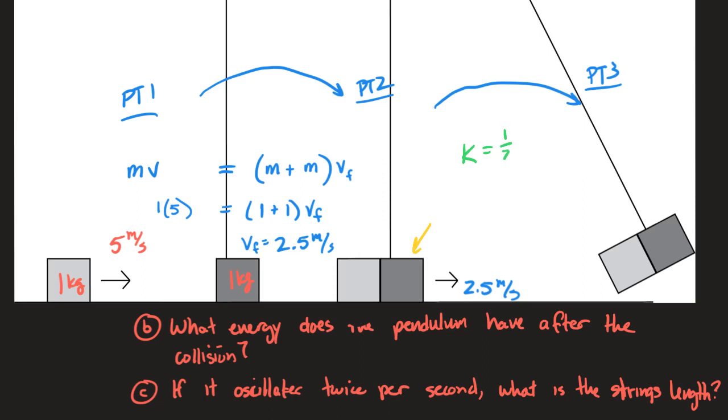That's going to be one half times the mass, which is two, times the velocity which is 2.5 squared. You can't forget to put the mass as two here. So half of two is one, and 2.5 squared will be 6.25 joules. And that's the kinetic energy of the system. We good to go? Question c has nothing to do with any of this.